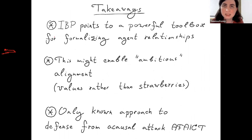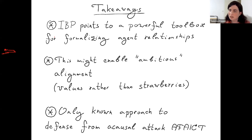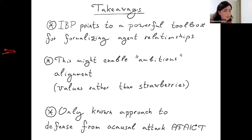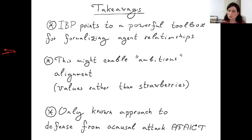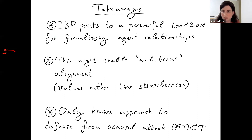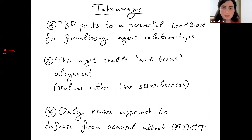I'll finish with three main takeaways. First: information physicalism points to a powerful toolbox for formalizing agent relationships. The tools — defining counterfactuals, which programs are running, which agents are running, what agents want, and what the causal relationships between them are — seem like really powerful tools that give us a lot of degrees of freedom for building specifications that can make our AI aligned.